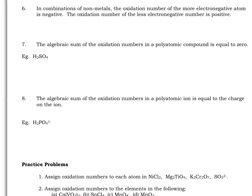In a combination of nonmetals, the oxidation number of the more electronegative atom is negative, and the oxidation number of the least electronegative atom is a positive oxidation number. The rules we've covered take a lot of this into account, so we don't have to worry too much about it. Now, some elements in covalent compounds will have three or four different oxidation numbers they could possibly have, so we won't always know their oxidation number upfront.